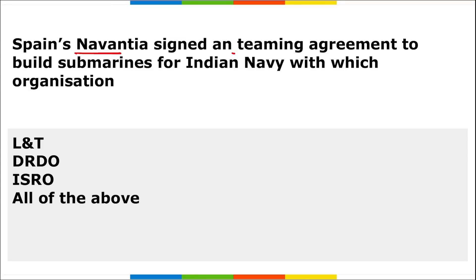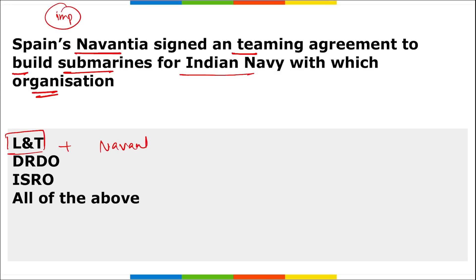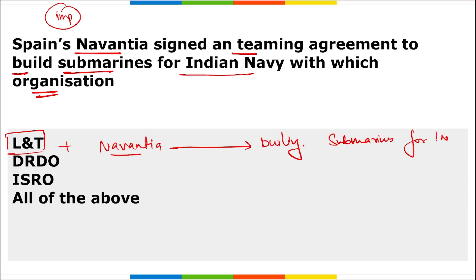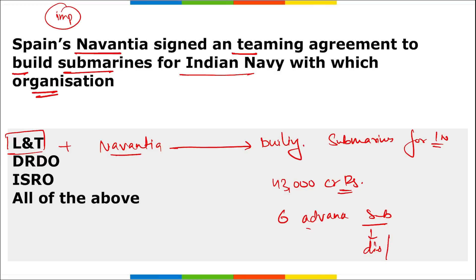Spain's Navantia signed a teaming agreement to build submarines for the Indian Navy with L&T. Together they signed a contract worth 43,000 crore rupees to build six advanced submarines. These submarines will be diesel-electric submarines for the Indian Navy.